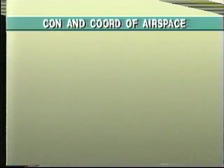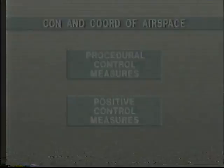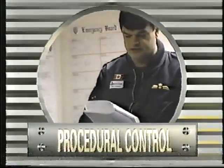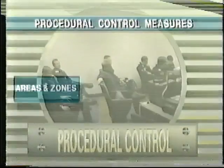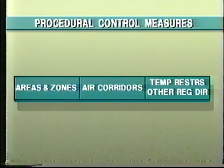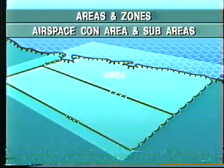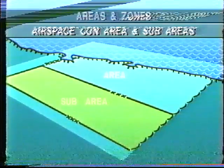Airspace control and coordination is normally achieved by a combination of procedural and positive control measures. Procedural control is restrictive in nature, and consists of measures which are promulgated in various plans, directives, and SOPs by the airspace control authority. These measures include areas and zones, air corridors, temporary restrictions, and other regulating directives, which are designed to prevent or minimize interference among users. Airspace control areas and sub-areas are the basic geographical elements contained within the operational commander's area of responsibility, wherein control is provided as an integrated system by the ACA to meet the needs of all users.